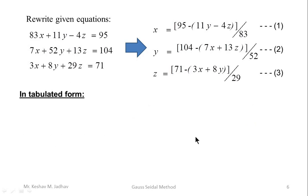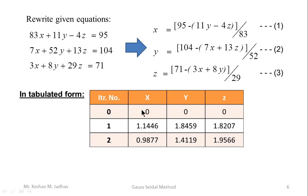We can now write the solution in tabulated form. The table has columns: iteration number, x, y, and z. The initial values (x = 0, y = 0, z = 0) are listed first, followed by the values from iteration 1 and iteration 2, each computed using the updated values from the previous step.